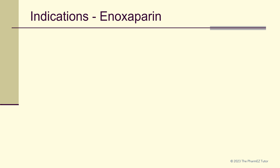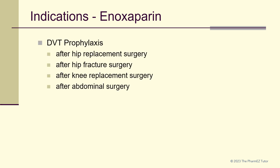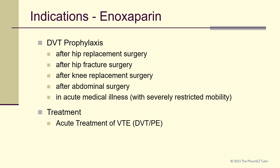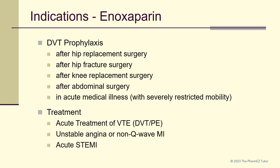Here is a list of indications for enoxaparin. Enoxaparin can be used for DVT prophylaxis after hip replacement surgery, after hip fracture surgery, after knee replacement surgery, after abdominal surgery, and in acute medical illness with severely restricted mobility. Enoxaparin can also be used for the acute treatment of VTE, which includes DVT and PE. It can also be used in the treatment of unstable angina or non-Q wave MI, and in the treatment of acute STEMI.